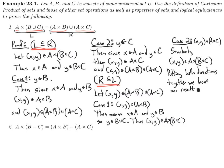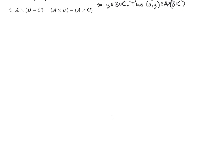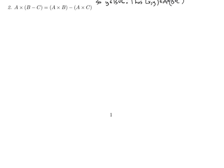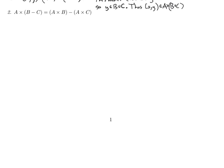So that one wasn't too bad. The big thing is just making sure that you understand the definition of all of these objects — what it means to be in a Cartesian product, what it means to be in a union. If you understand that, these aren't that bad. Let's look at the second part: A cross B minus C equals A cross B minus A cross C.